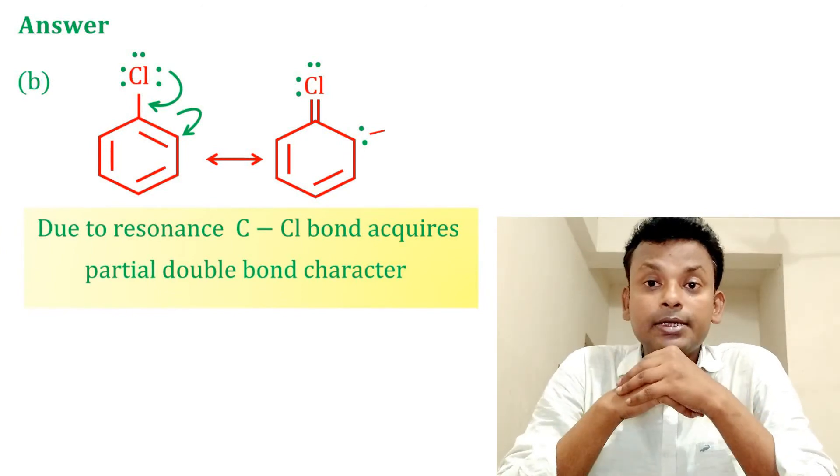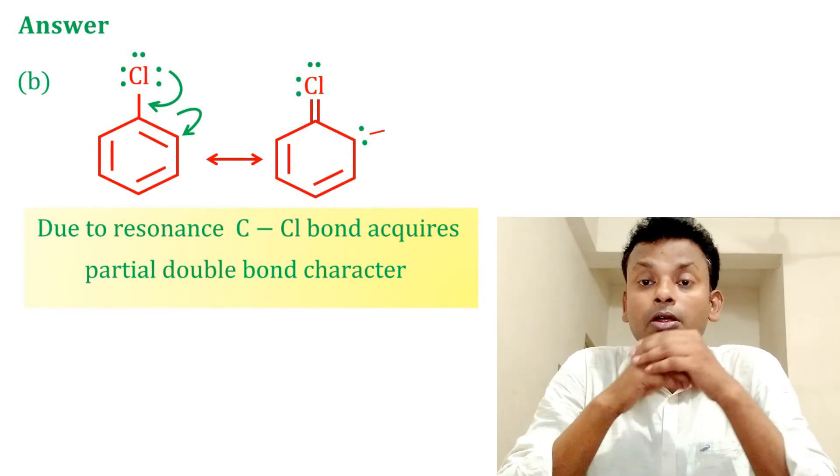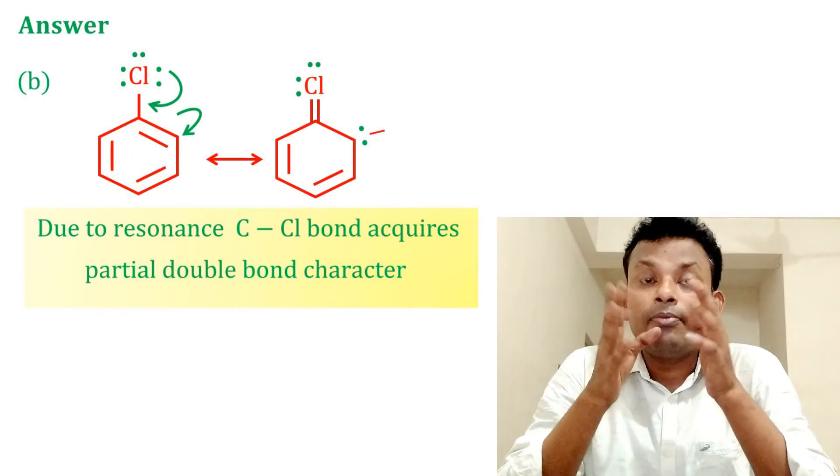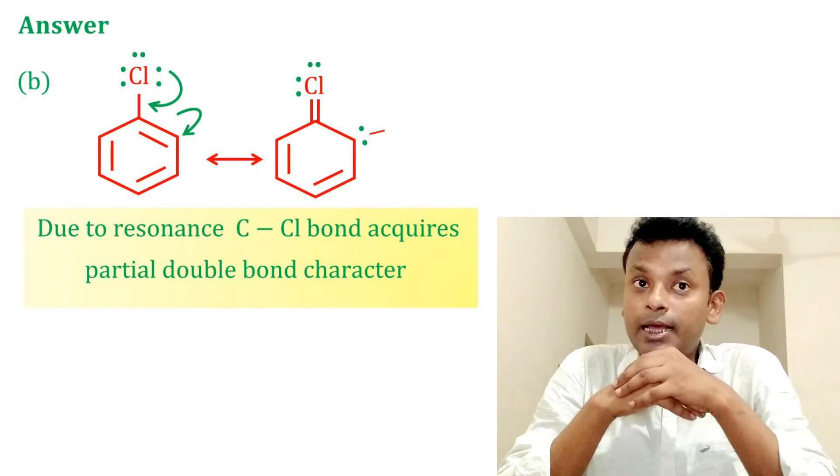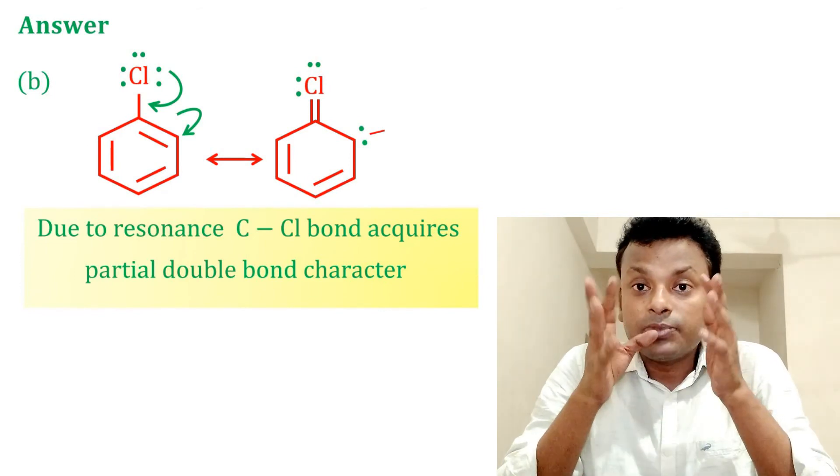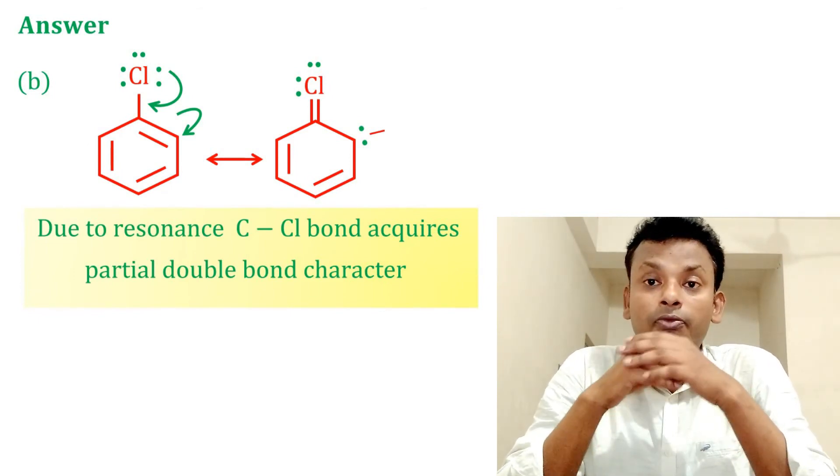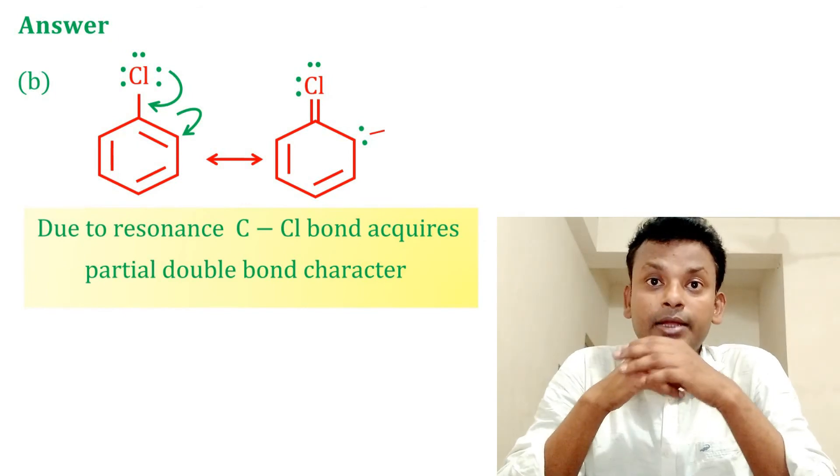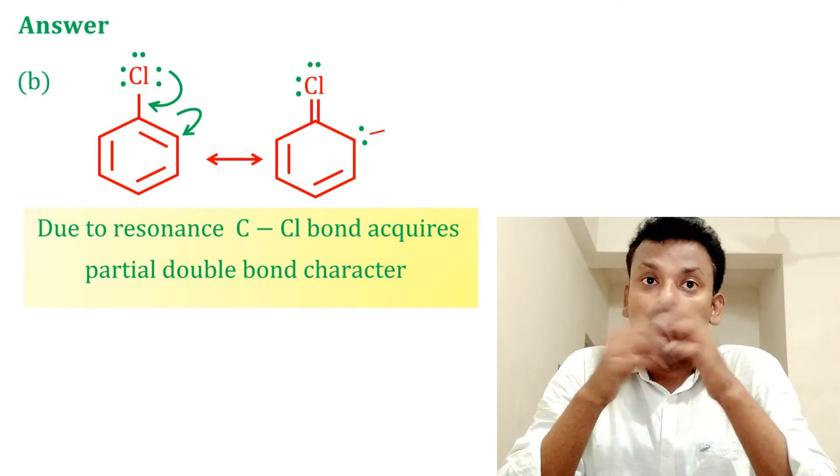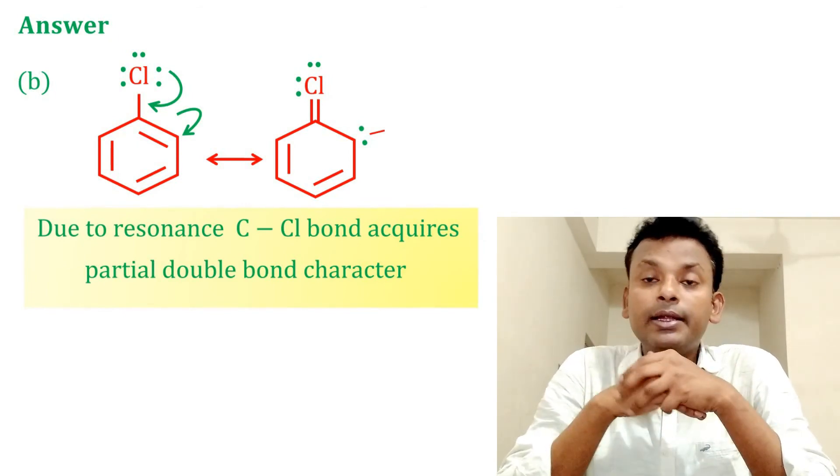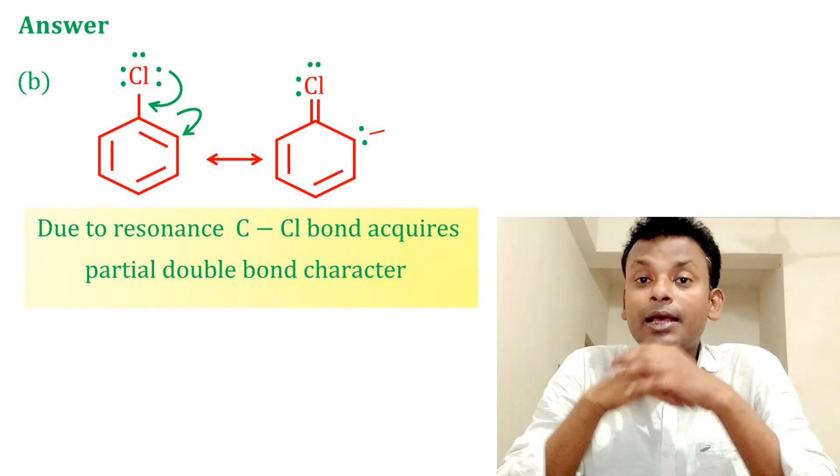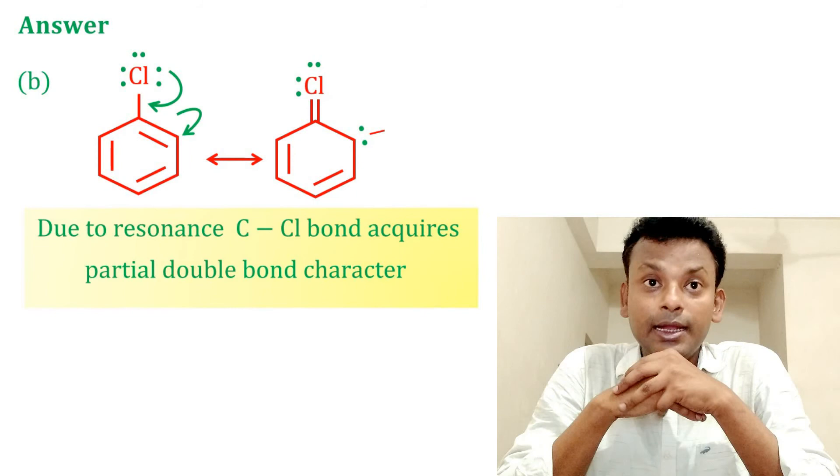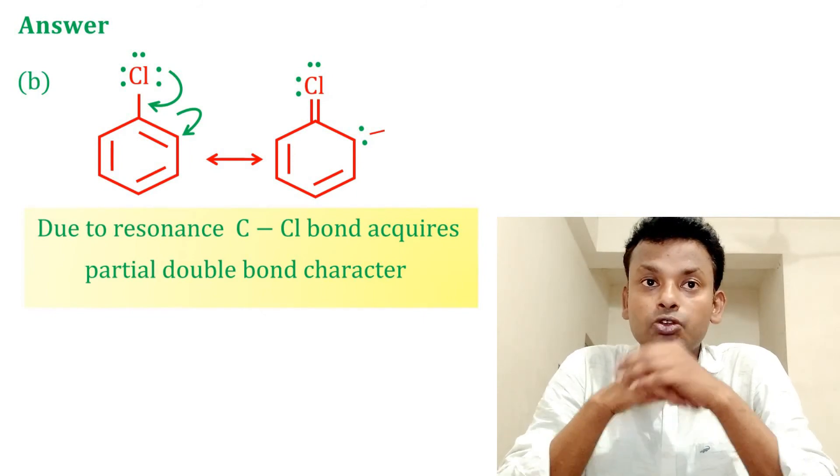And other options give aniline. First option: reduction of nitrobenzene gives aniline. Option C: hydrolysis of phenyl isocyanide in acidic solution also gives aniline. And degradation of benzamide with bromine in alkaline solution also gives aniline. So option B is correct answer.